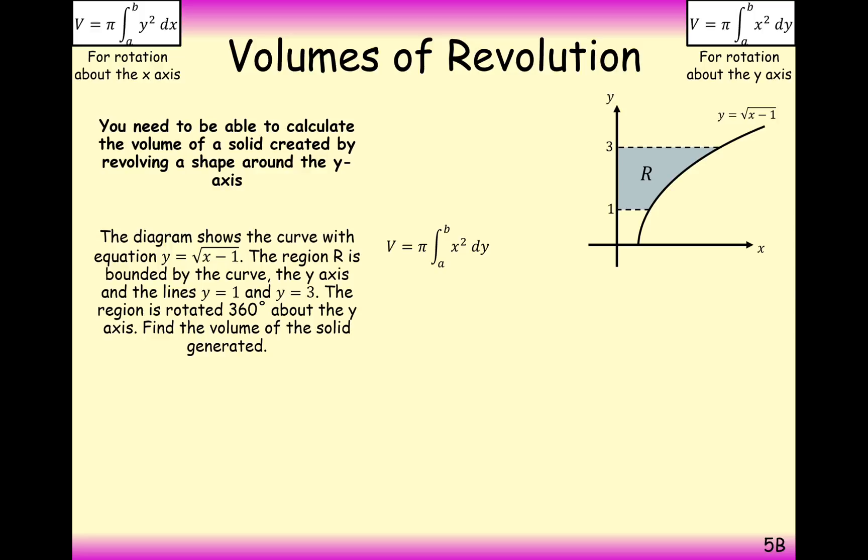So what we need first is to get x squared on its own independently. What we have to start with is the equation y equals the square root of x minus 1. So we're going to have to do a little bit of rearranging here. This is very common in these types of questions because generally the formulas are given in terms of x rather than in terms of y. So the formula that we need to use is x equals y squared plus 1.